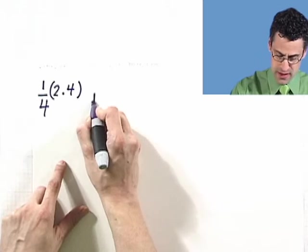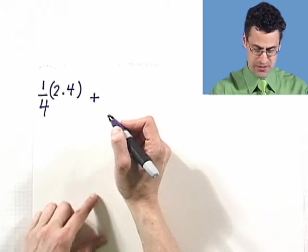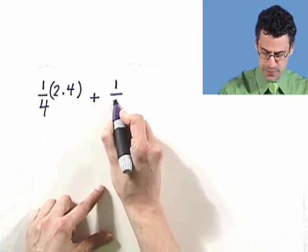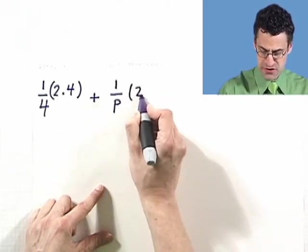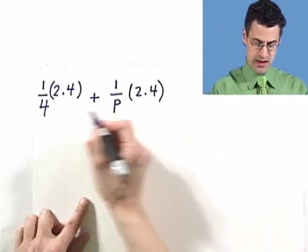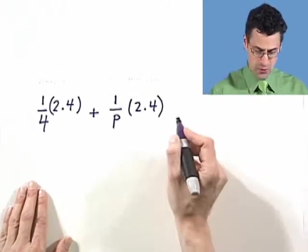But now we also have Peter working away. Now we don't know what Peter's rate of cleaning is, how long it takes him to clean a house. So let's just call that P, P hours. So 1 over P times the same 2.4 hours, because they both worked for a total of 2.4 hours each. And when they combined their efforts, how many houses did they actually clean? Well, one.